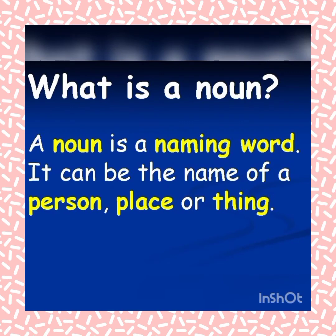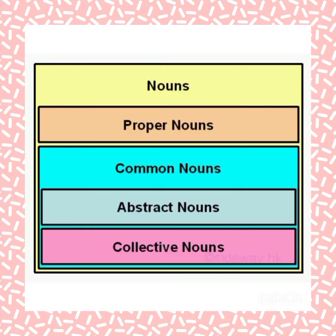Now let us revise. What is a noun? A noun is a name word. It can be the name of a person, place or thing. There are four kinds of nouns.